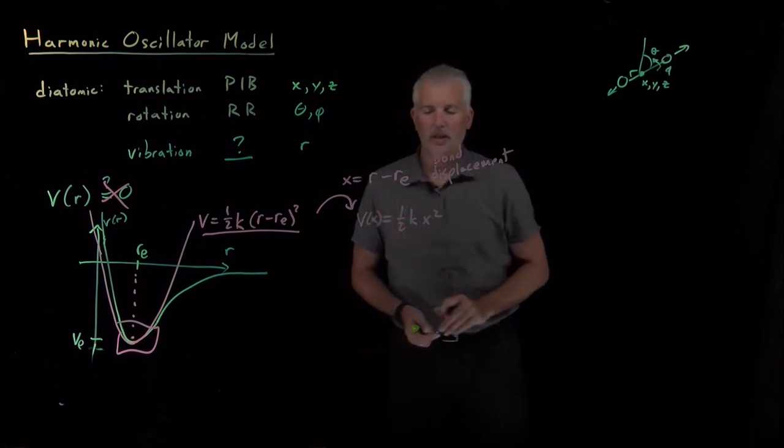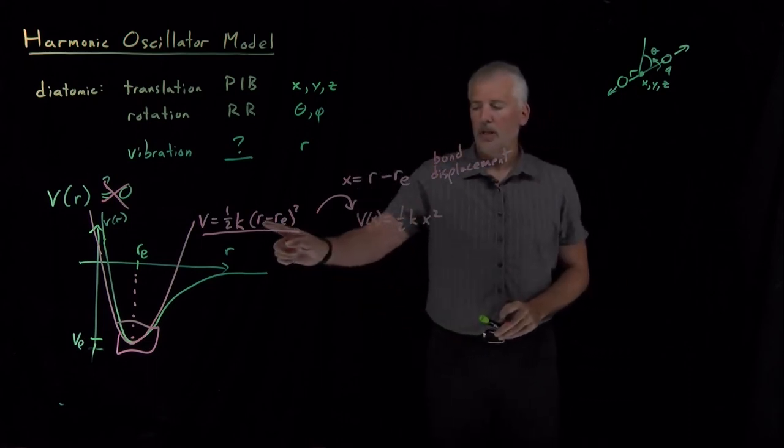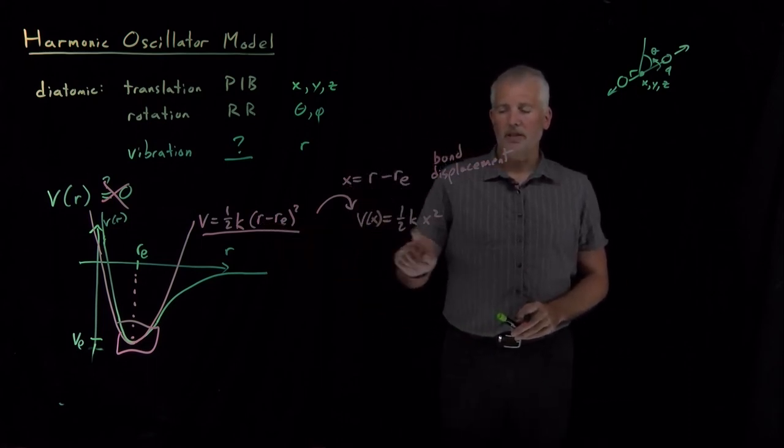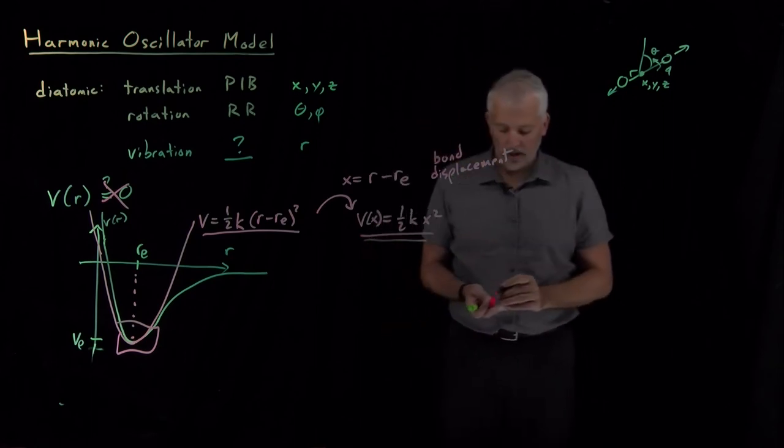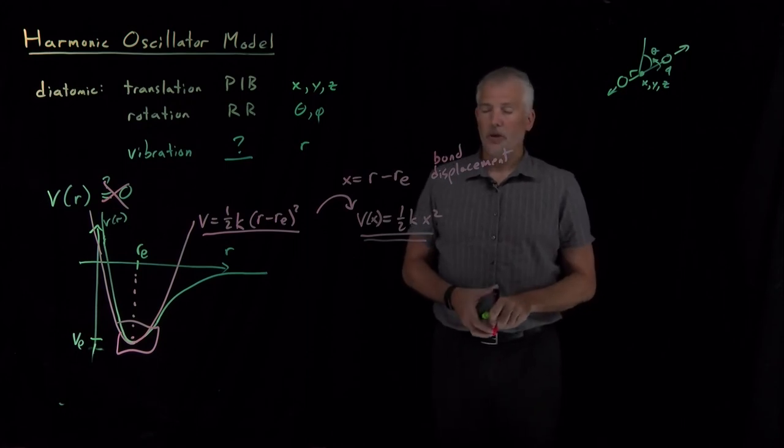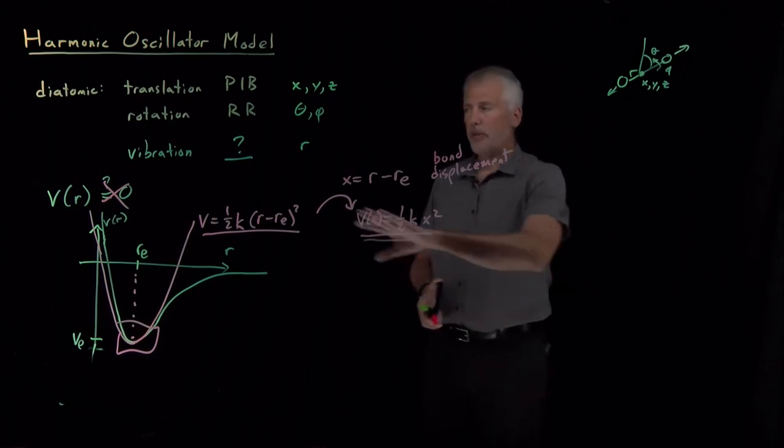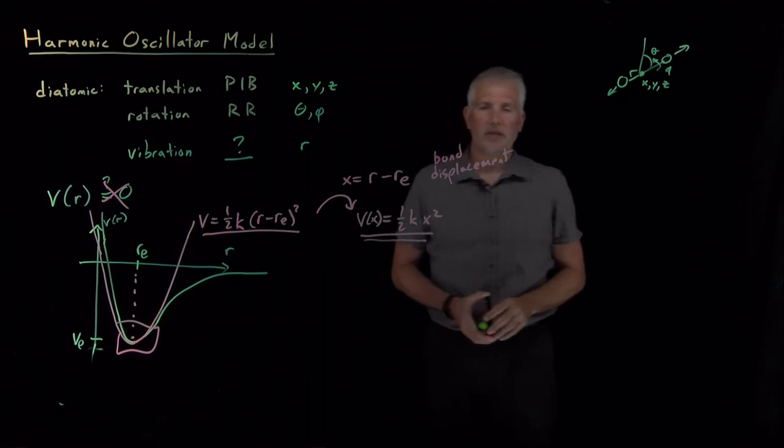And with that change, I have a potential energy that depends not on bond length, but now on this new variable x, the bond displacement that I've just defined. So that's the expression that we'll use and insert into the Schrodinger equation to solve for the quantum mechanical behavior of vibration of these diatomic molecules.